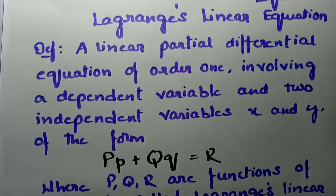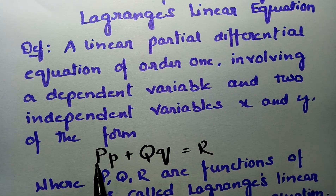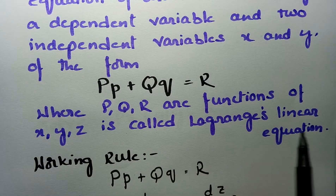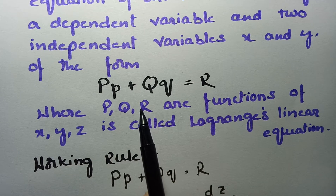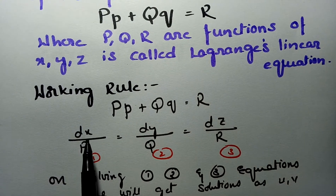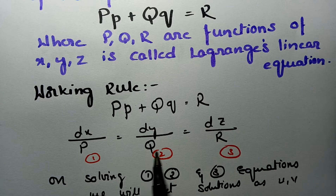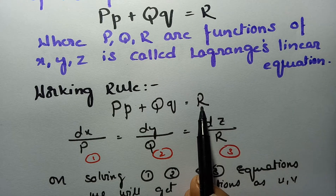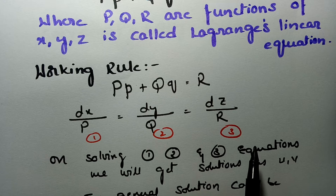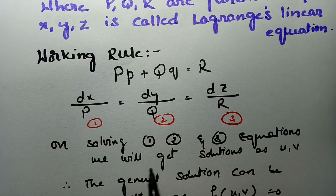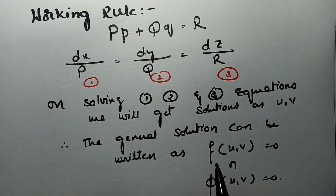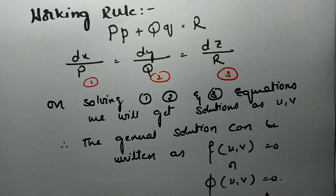So to summarize: any equation of the form P·p + Q·q = R is a Lagrange's linear differential equation with two independent variables and one dependent variable. The working rule is to transform it into dx/P = dy/Q = dz/R, substitute the P, Q, R values, solve pairs of equations to get solutions u and v, and write the general solution as φ(u, v) = 0.